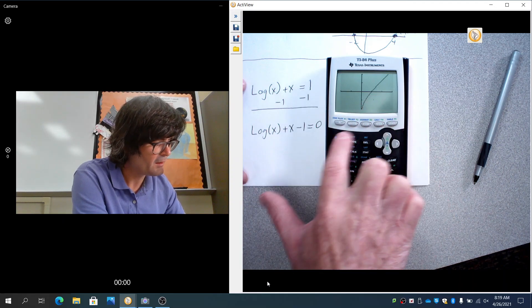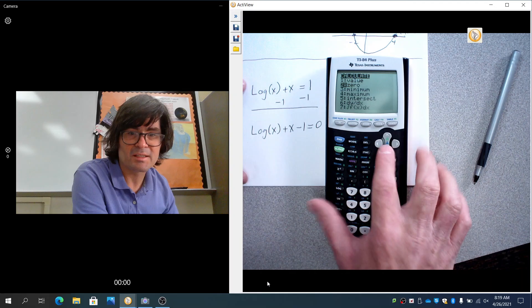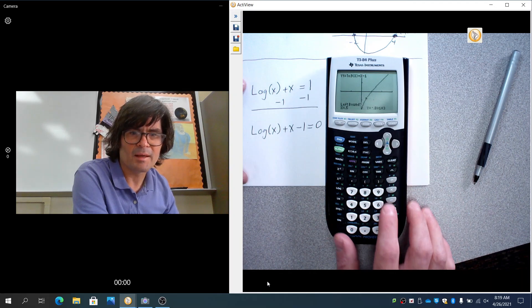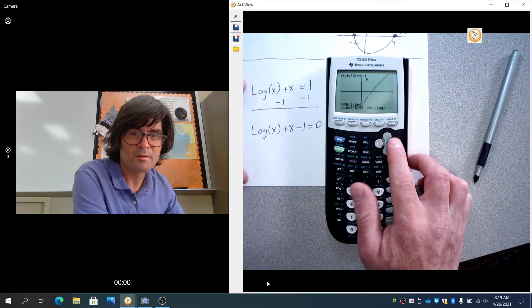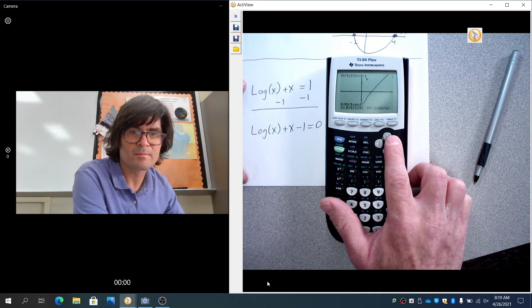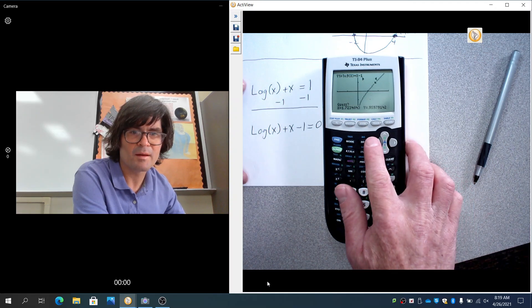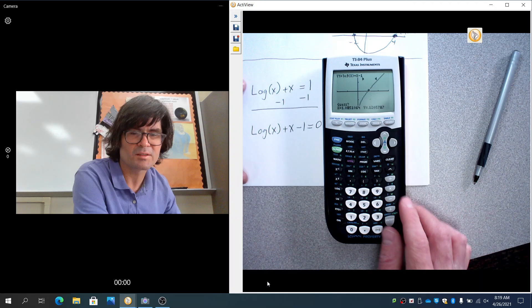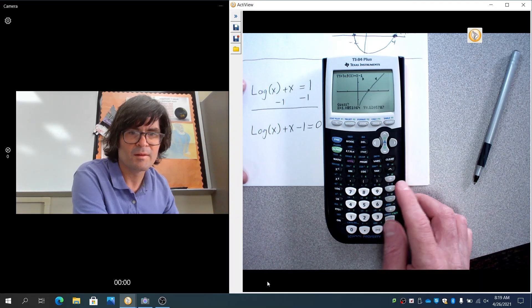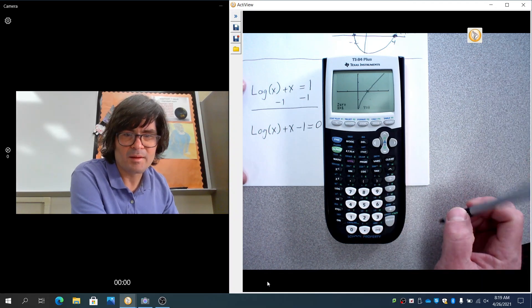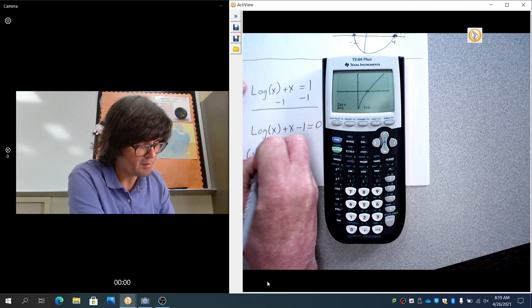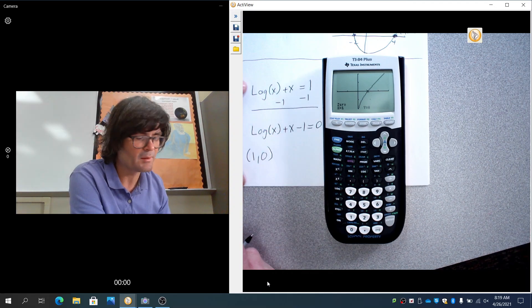So I'm going to go to second calc. Ask it to find a zero. And left bound maybe right here. That looks good. What's on the right bound? Maybe right there. And then guess. You just have to be kind of close. So that looks good. And then it turns out to be 1. Believe it or not. So that's my answer is 1, 0.